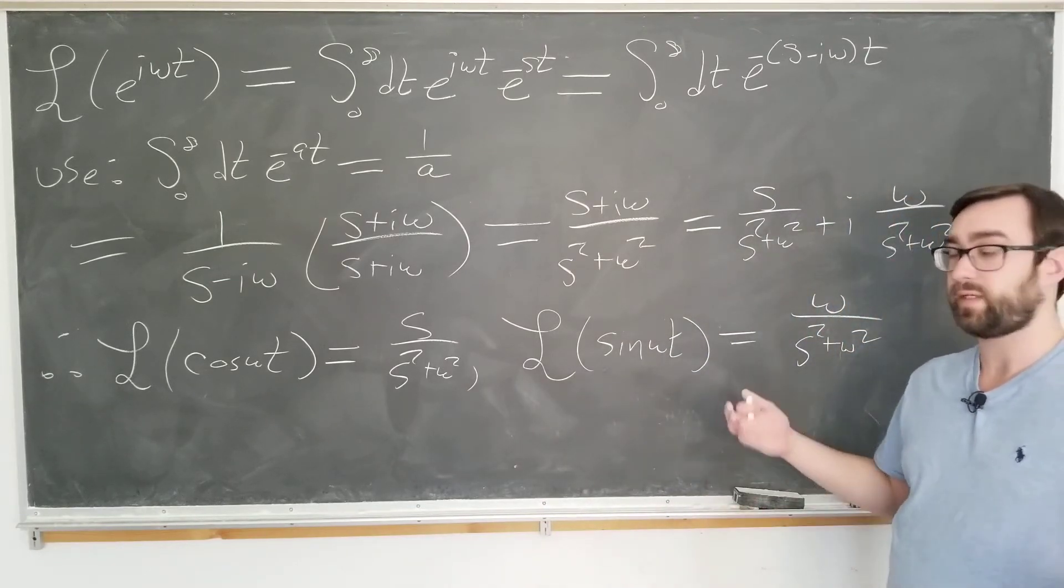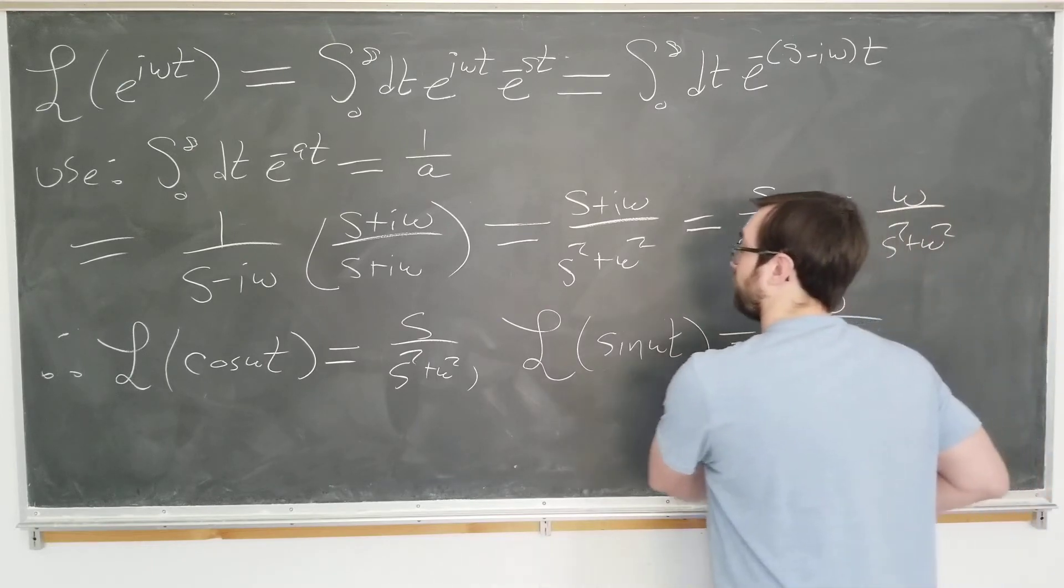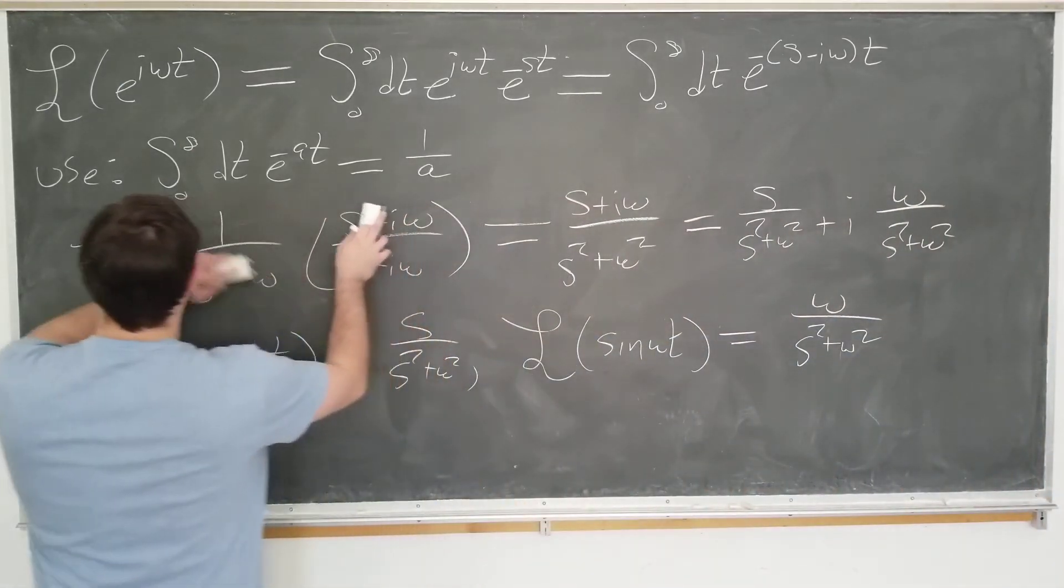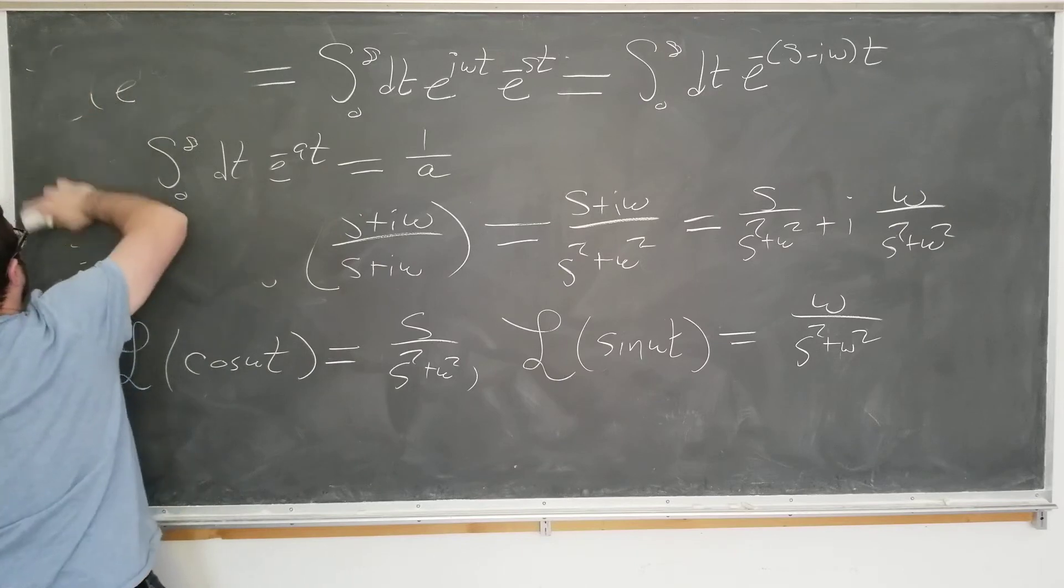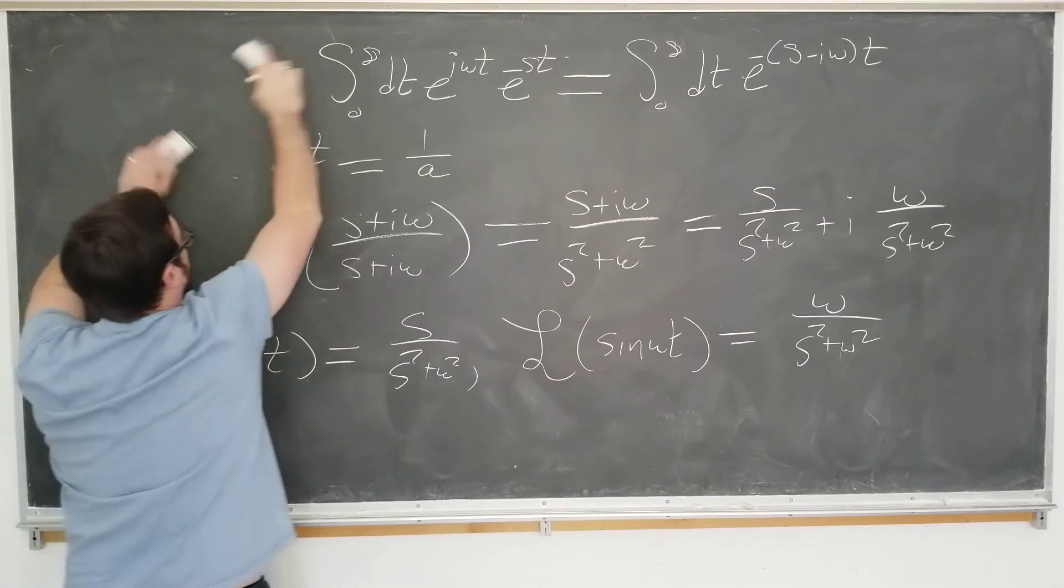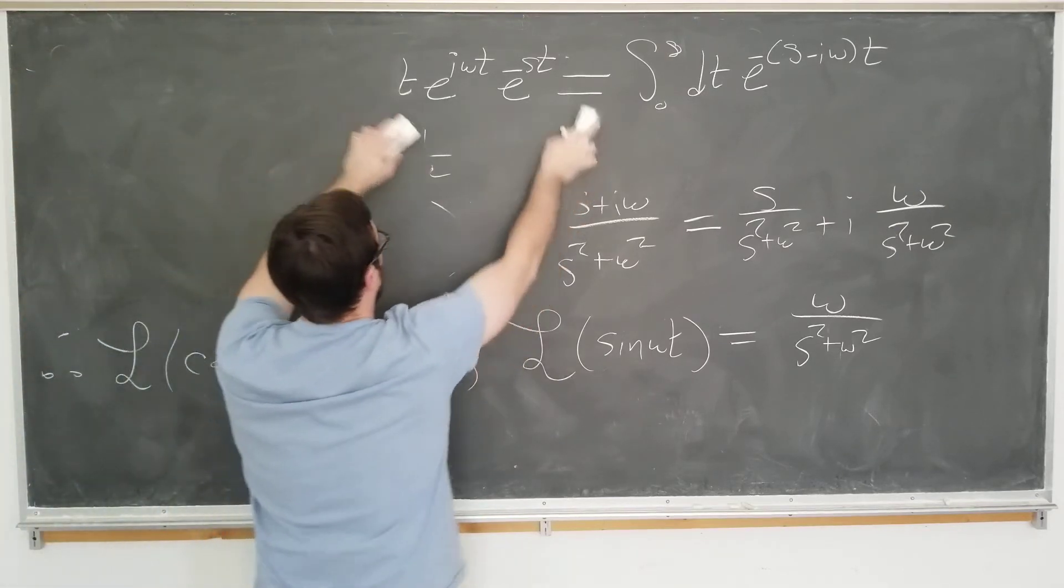We're going to plug in omega equals 1 and use this to show that the derivative of sine is cosine, of course. The functions are not equal.